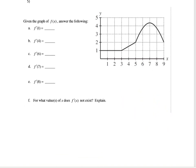The last one: given the function f of x shown in the graph, we want to find f prime of 1, f prime of 4, f prime of 6, 7, and 8. Now, what does f prime mean? It means what's the slope at that point. If we look at f prime of 1, which is right here, we're looking at what's the slope at this point. Since it is a horizontal line, it's going to have a slope of 0.